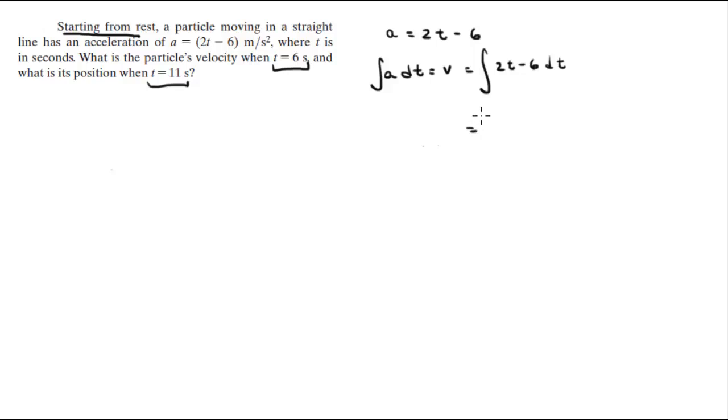This integral comes out to be t squared minus 6t plus c. However, c is equal to 0 because we are starting from rest. So the velocity is t squared minus 6t.